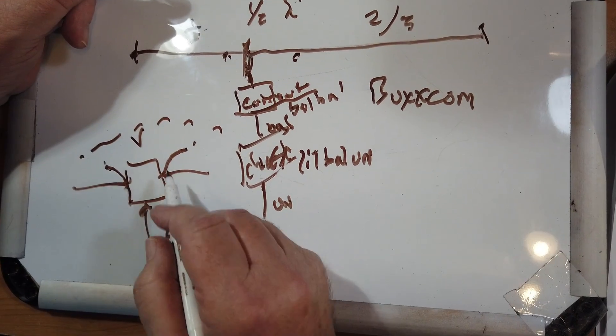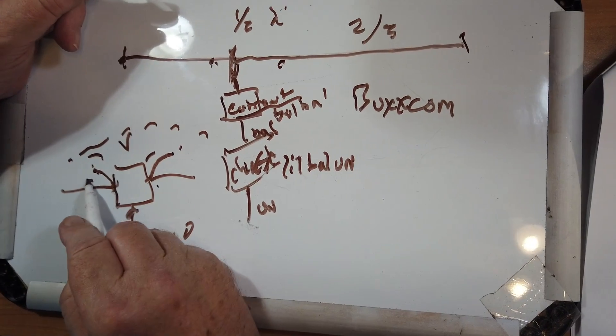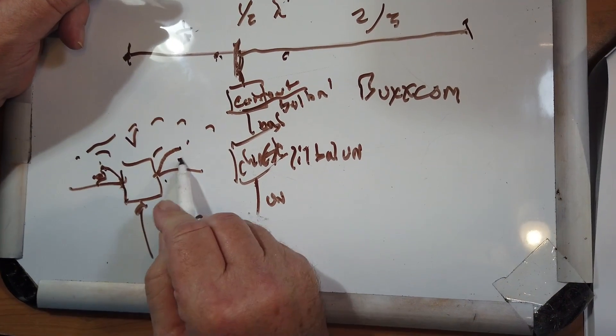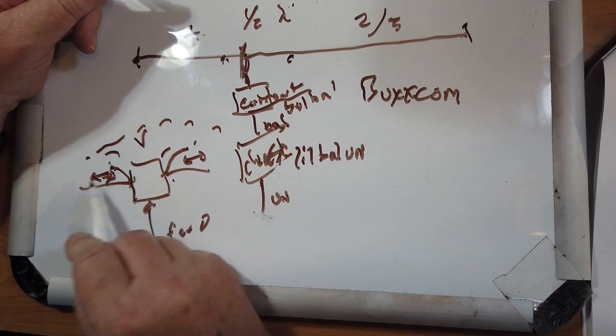A current balun doesn't matter what the voltage is on one side or another. It makes sure that the current flowing in each side of this is the same.